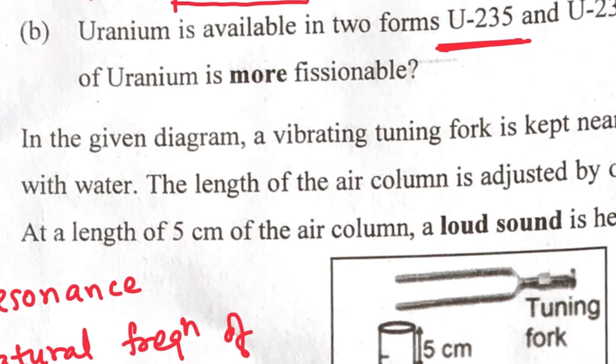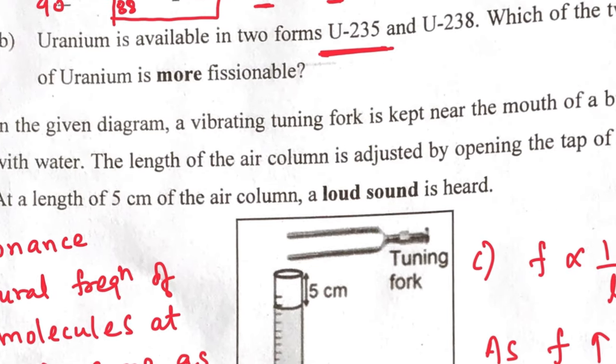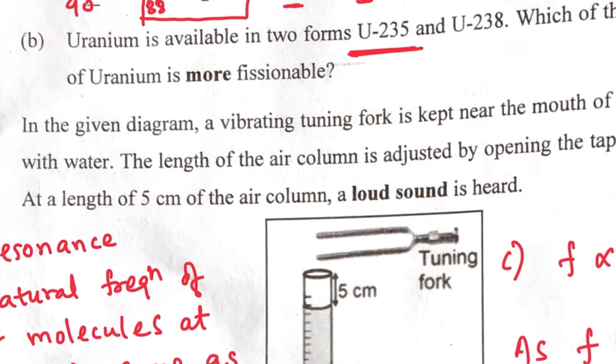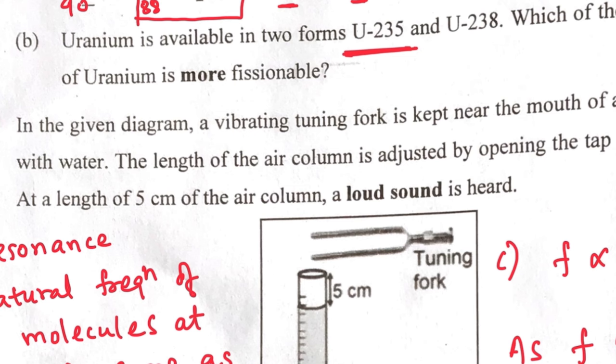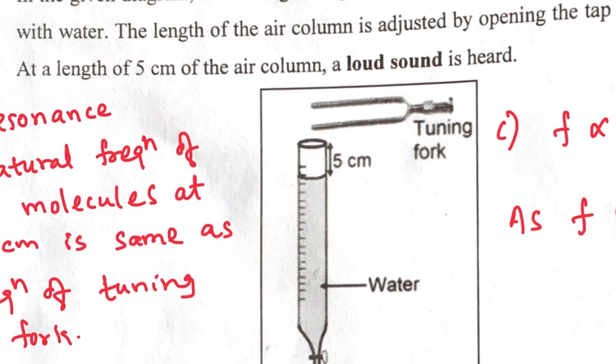Next question: Uranium is available in two forms, uranium-235 and 238. Which of the two isotopes of uranium is more fissionable? This is based on fact. Answer is uranium-235.